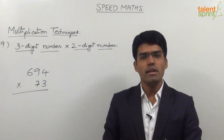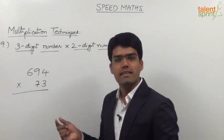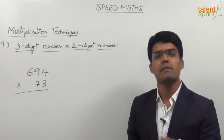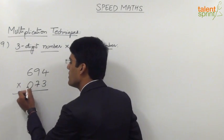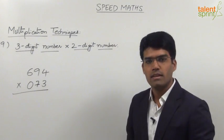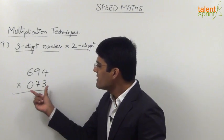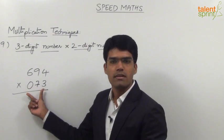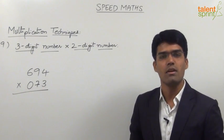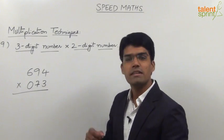What we only need to do here is convert this two-digit number 73 into a three-digit number, and that can be done simply by placing a zero in front of 73. The reason for keeping a zero here is that once this number becomes a three-digit number, we can apply the same five-step procedure of three-digit multiplication even in this case.